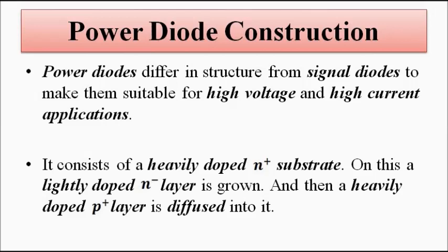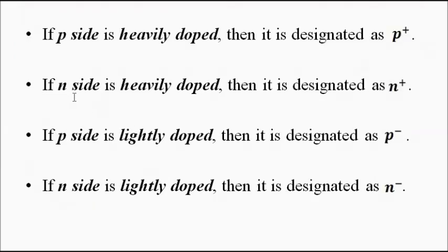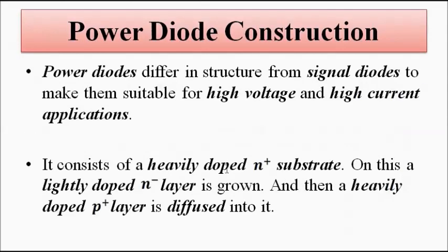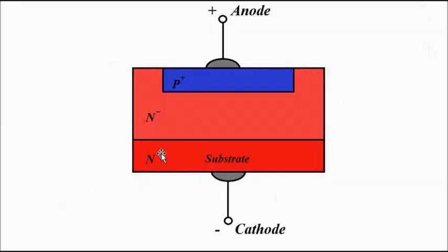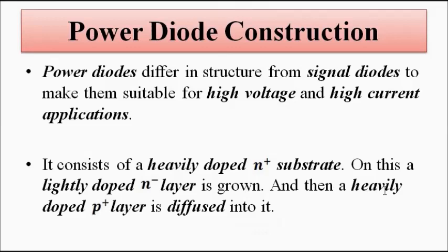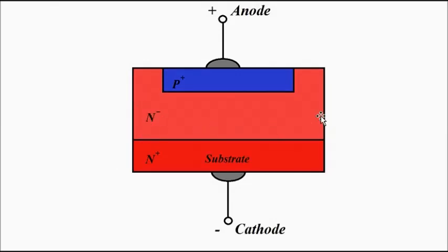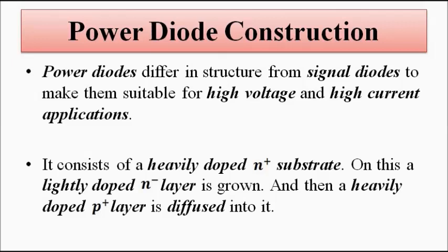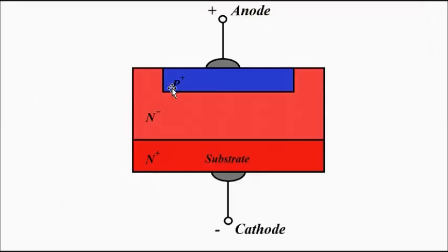The power diode consists of a heavily doped N+ substrate. On this N+ substrate, a lightly doped N- layer is grown. The N+ substrate is shown in deep red color and the N- layer in light red color. Then on that lightly doped N- layer, a heavily doped P+ layer is diffused, shown in blue color.